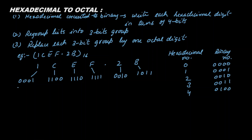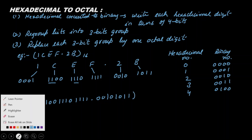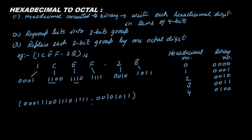Now writing this number in combined form: 0001 1100 1110 1111 dot 0010 1011. Now we regroup into groups of 3 bits. For the integer part, we go from right to left, and for the fractional part we go from left to right. We form groups of 3 bits accordingly.